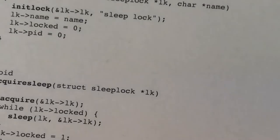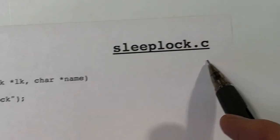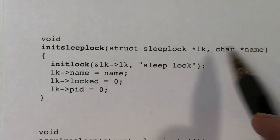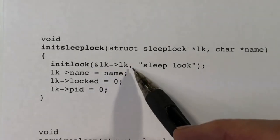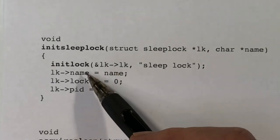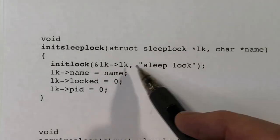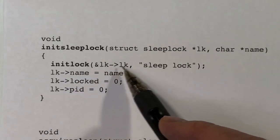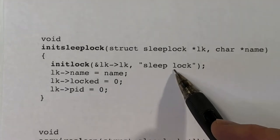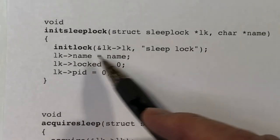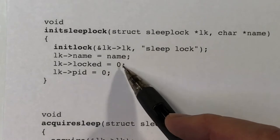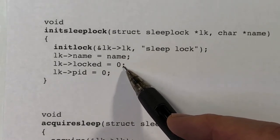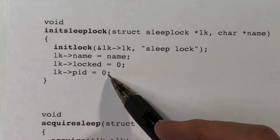The file sleeplock.c contains the functions. The init function is passed a pointer to one of these structures as well as a name string, and it initializes all four fields: lk, locked, name, and pid. The lk field is a spin lock, so we call the spin lock init function and give it an arbitrary name. We save the name field and set locked to indicate the sleep lock is currently not held — it's in the unlocked state. We also clear out the process ID.